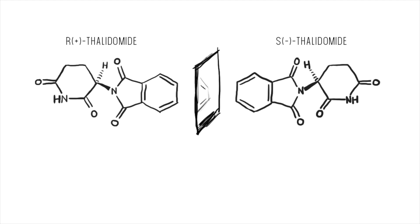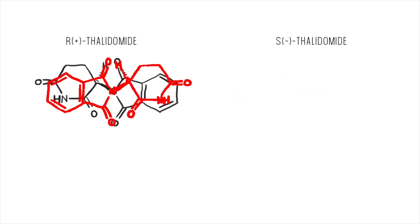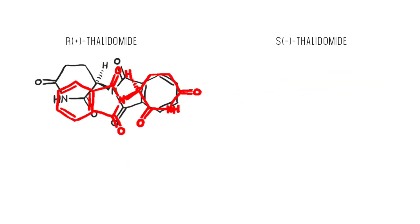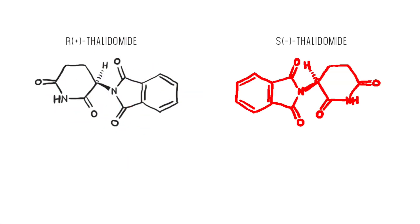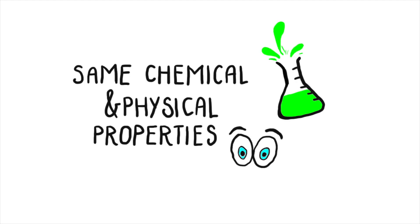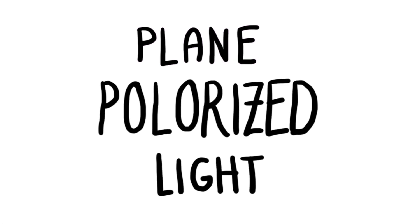The anatomers are mirror images and no matter which way you turn them, they can't be superimposed. Both the anatomers share the same chemical and physical properties, except for how they behave with light.